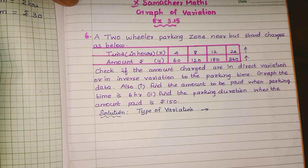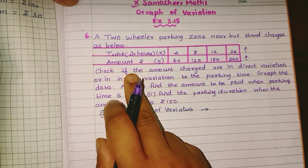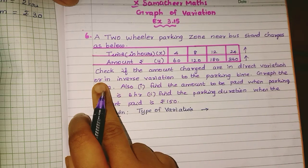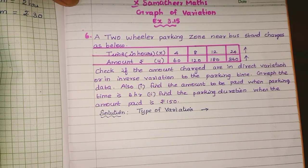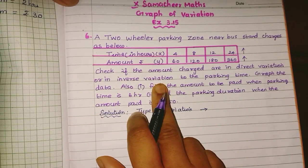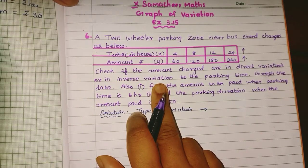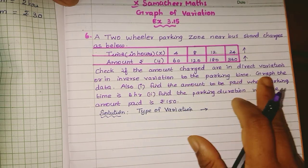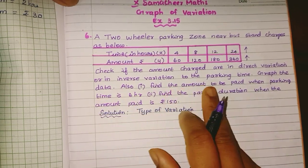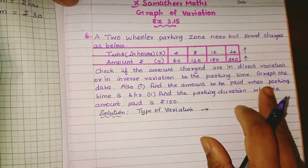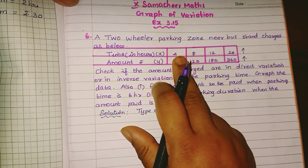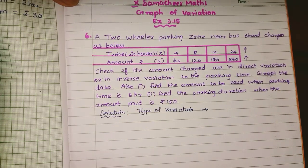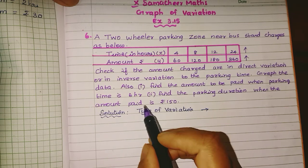What type of variation is it? It is direct variation. Check if the amount charged is in direct variation or inverse variation. Inverse variation is otherwise called indirect variation. Also find the amount to be paid when the parking time is 6 hours. 4 hours and 8 hours are given; 6 hours is not directly in the table.